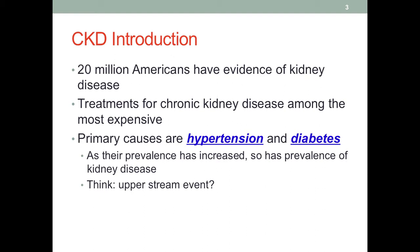But what about events even further upstream from hypertension and diabetes? We know that about two-thirds of adults in the United States are either overweight or obese, and obesity is a risk factor for both hypertension and diabetes. So we can see the chain of events: when someone becomes obese and the obesity is not managed properly over time, the patient may develop hypertension and/or type 2 diabetes, eventually hurting the kidney and leading to chronic kidney disease.